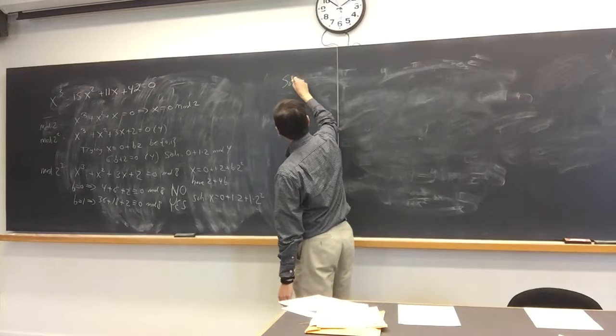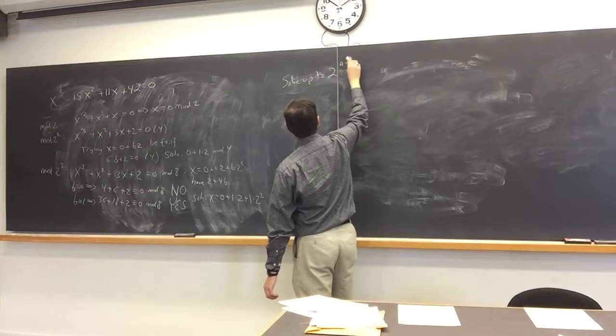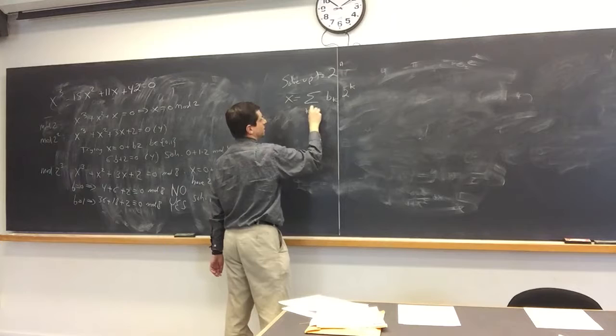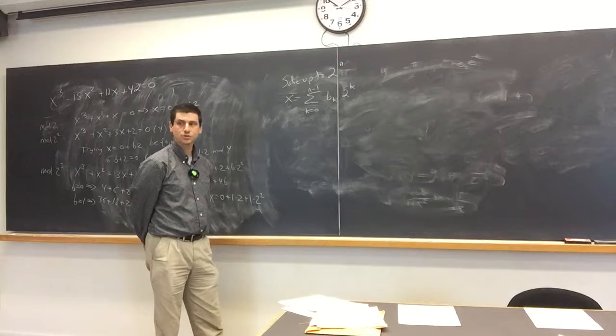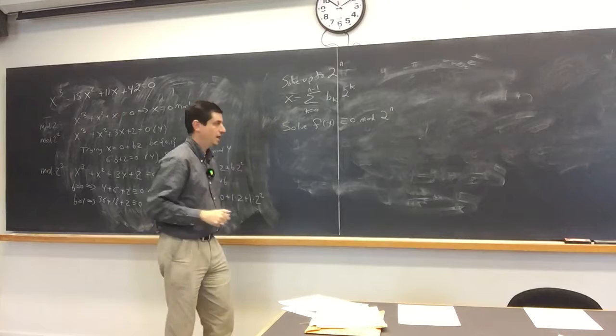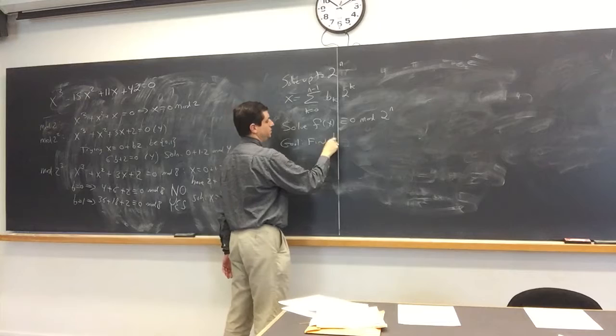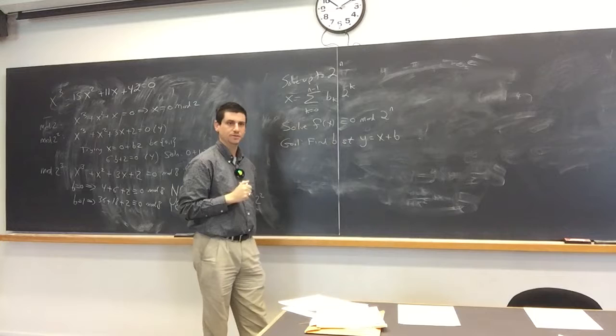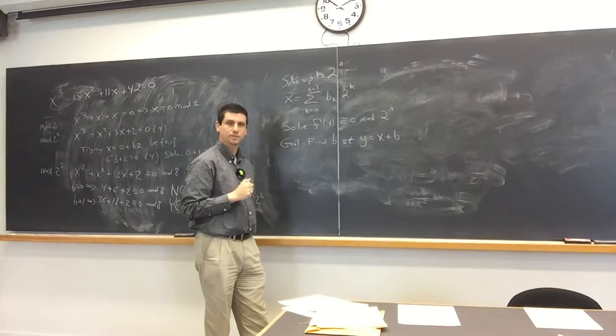So let's assume we can solve up to 2^n. We have some solution x = Σ bₖ·2^k for k from 0 to n−1. This is a solution and it solves f(x) ≡ 0 mod 2^n. The goal is to find b such that y = x + b·2^n is a solution to f(y) ≡ 0 mod 2^(n+1).